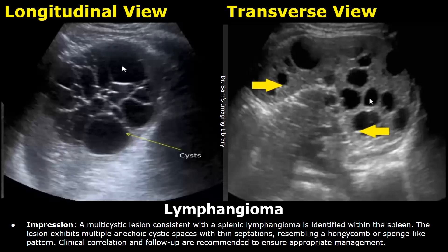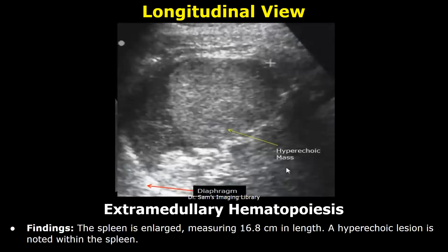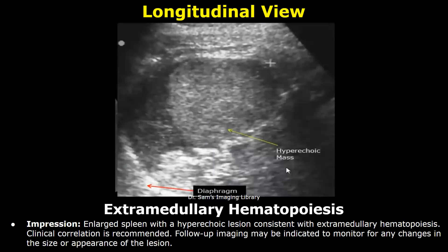This is an example report of extramedullary hematopoiesis. The indication was a follow-up for extramedullary hematopoiesis in the spleen. The findings in this example were an enlarged spleen measuring 16.8 cm in length and a hyperechoic lesion was seen. These findings are written in the impression and the impression ends with the line of clinical correlation.